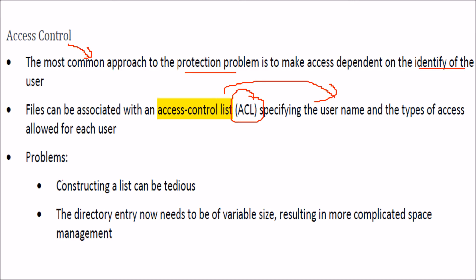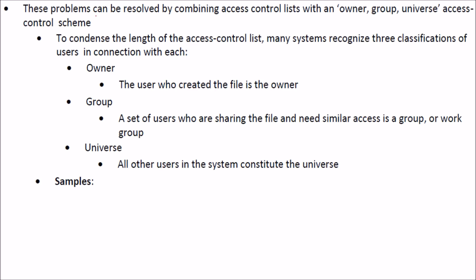There can be some problems with constructing such a list. It can be quite tedious sometimes, and the directory entry now needs to be of variable size, requiring complicated space management. These problems can be resolved by combining the access control list with an owner, group, and universe access control scheme.